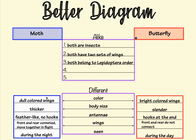Let me show you an example. Remember, we're comparing and contrasting moths and butterflies. On the left I have my topic, moth; on the right, butterfly. In the center, I've listed three ways they're the same: both are insects, both have two sets of wings, and both belong to the Lepidoptera order. Below that, I've listed five topics of differences: color, body size, antennae, wings, and when they're seen. For color, on the left I have dull colored wings for moth, and on the right, bright colored wings for butterfly. I've done the same for the other four topics of difference. This will set you up better when you start writing your sentences, because you won't have to think of the details — they'll already be in your planning.